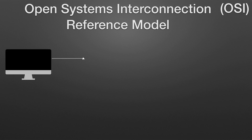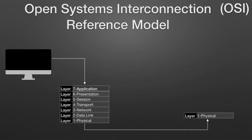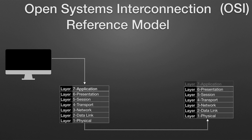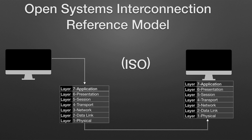The Open Systems Interconnection (OSI) Reference Model describes how information from a software application in one computer moves through a network medium to a software application in another computer. The OSI Reference Model is a conceptual model composed of seven layers, each specifying particular network functions. The model was developed by the International Organization for Standardization (ISO) in 1984, and is now considered the primary architectural model for intercomputer communications. The OSI model divides the tasks involved with moving information between networked computers into seven smaller, more manageable task groups.